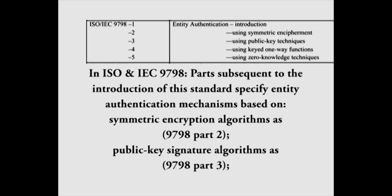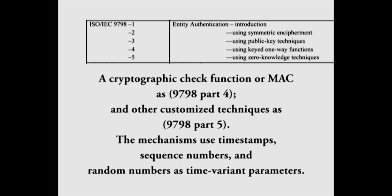ISO and IEC 9798 parts specify entity authentication mechanisms based on symmetric encryption algorithm as 9798 part 2, public key signature algorithm as 9798 part 3, a cryptographic check function or MAC as 9798 part 4, and other customized techniques as 9798 part 5. The mechanisms use timestamps, sequence numbers and random numbers as time variant parameters.